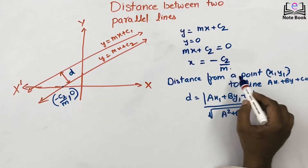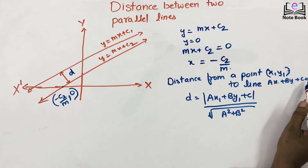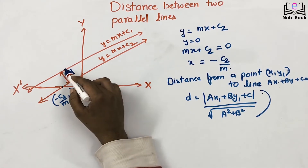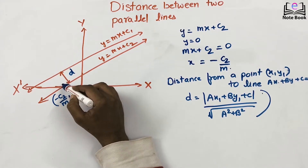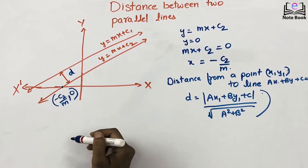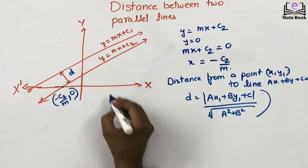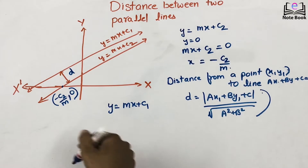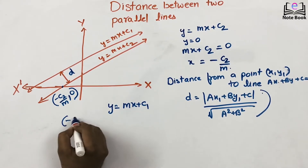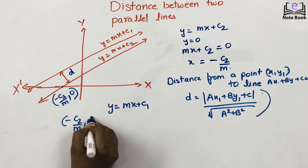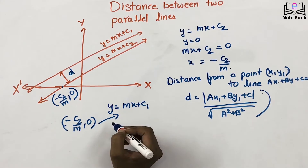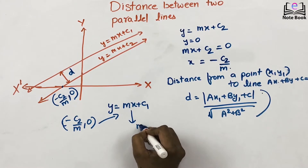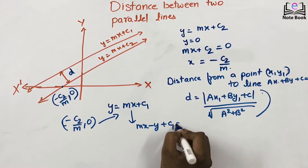We know that the distance from a point (x1, y1) to the line ax + by + c = 0 is given by the standard formula. We shall apply this formula here. Let the distance between these two parallel lines be d. I will find the distance from the point (-c2/m, 0) to the first line y = mx + c1, which I can rewrite as mx - y + c1 = 0.